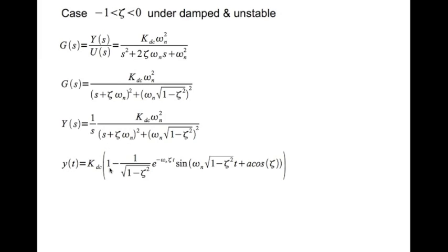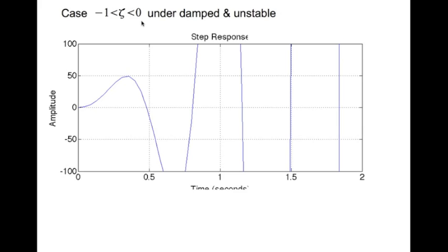The result is K_dc times (1 minus this expression). Since zeta is negative, this whole exponential term becomes positive — essentially you have a sine function that is growing exponentially, as opposed to decaying exponentially. If you look at the step response of this system with zeta between minus 1 and 0, you see that. The poles are obviously in the right half plane — that's why it's unstable.